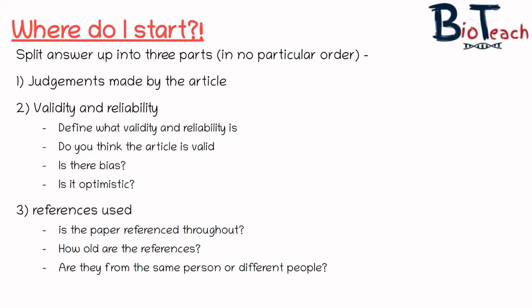The first part is looking at the judgements made by the article — are they positive or negative judgements? What have they said about the scientific issue? Number two is to think about what your definitions of validity and reliability are and to write them down in your answer. Do you think that Article 3 is valid or reliable? Usually my students find it easier to start their answers by defining what validity and reliability means, then go on to say whether they think the article is valid, and the remainder of the essay summarises their conclusions. You'd also need to mention whether you think there's bias or whether the article is written with an optimistic overview, which would go into your plan.